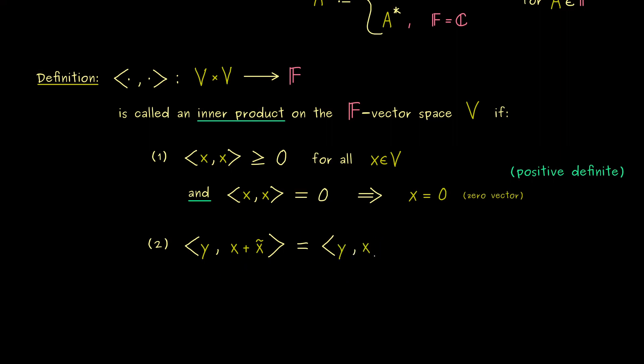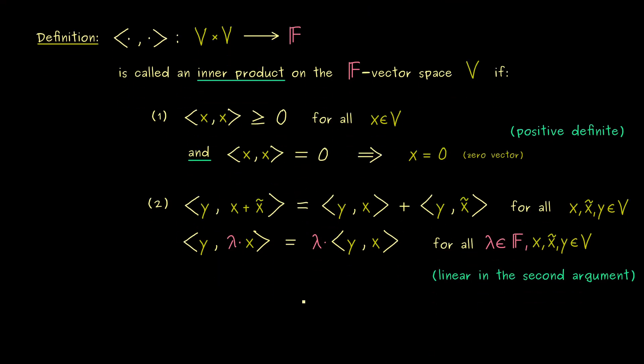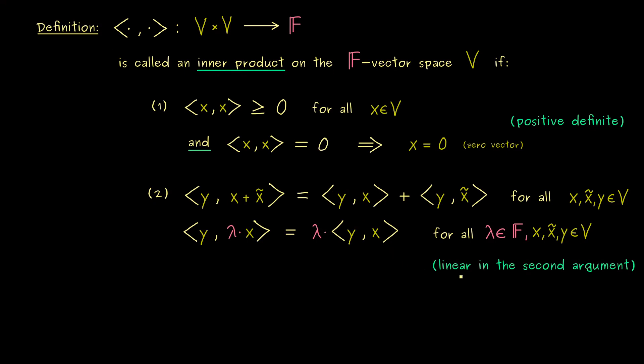But the property itself is not so hard, it is the linearity, so it means we can pull out the addition sign. And of course this equality should hold no matter which vectors x, x tilde and y we choose in our vector space V. However, this is only one part of the linearity, because we also want to pull out the scalar multiplication. This means this lambda here can be also written in front of the inner product. And in the same way, this should also hold for all possible inputs we have here. Ok and now the second property you can remember by saying the inner product is linear in the second argument.